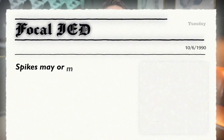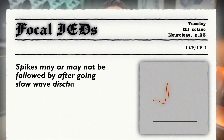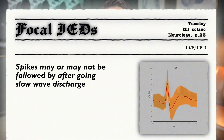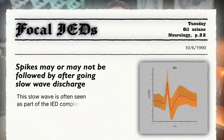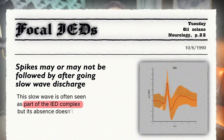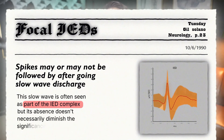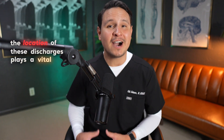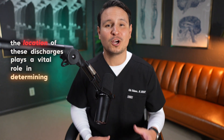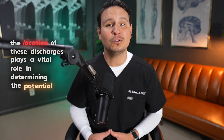These spikes may or may not be followed by an aftergoing slow wave discharge. This slow wave is often seen as part of the IED complex, but its absence doesn't necessarily diminish the significance of the spike itself. The location of these discharges plays a vital role in determining their potential for epileptogenicity.